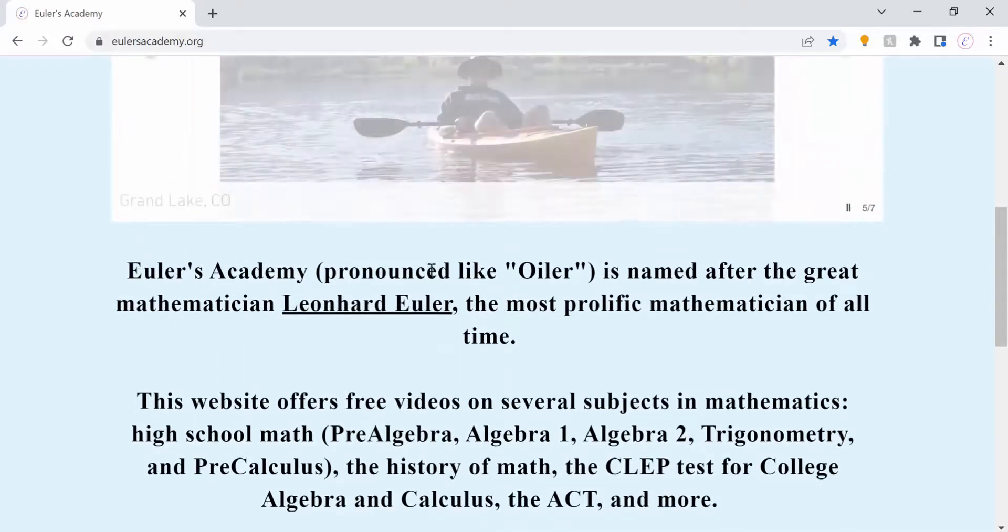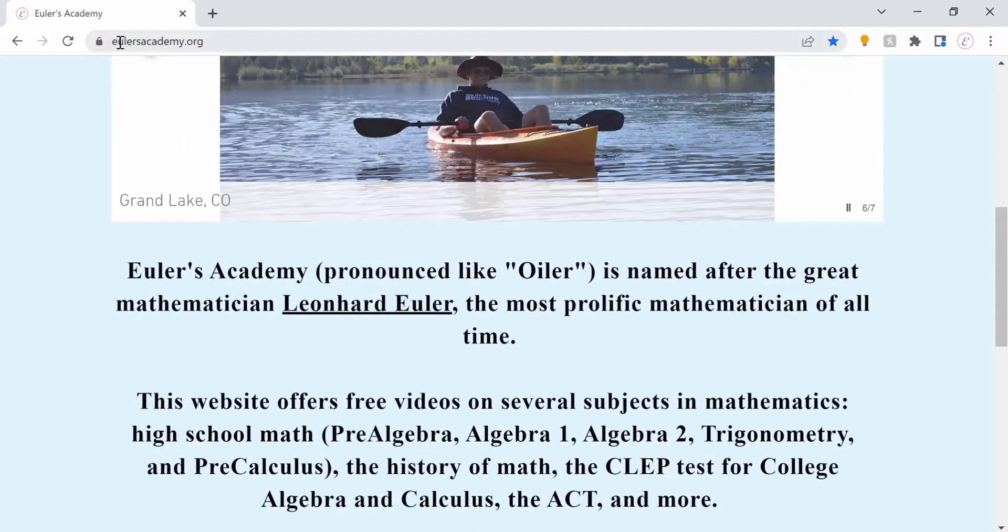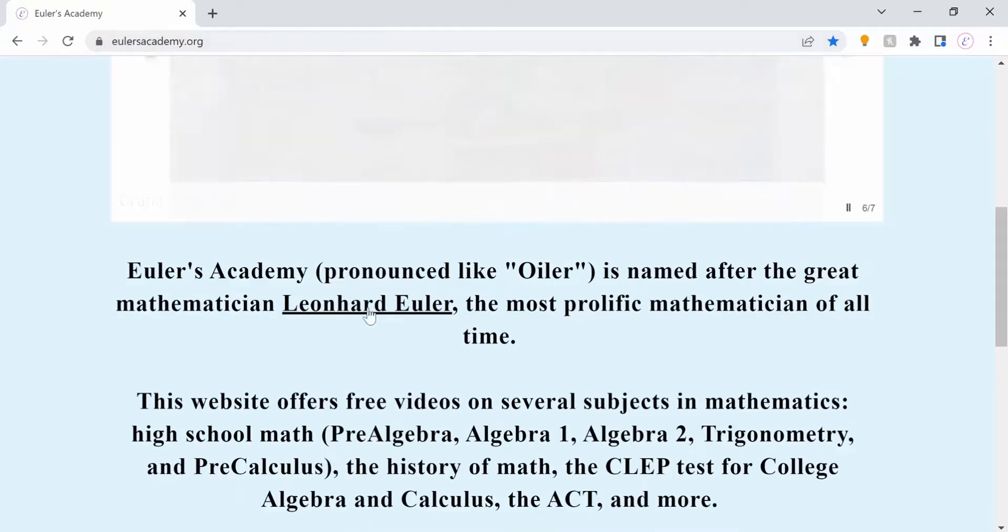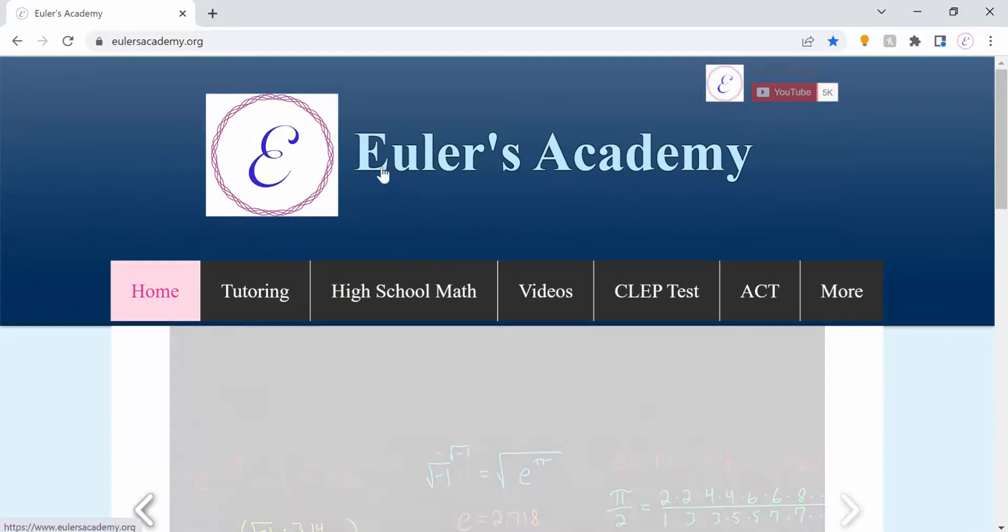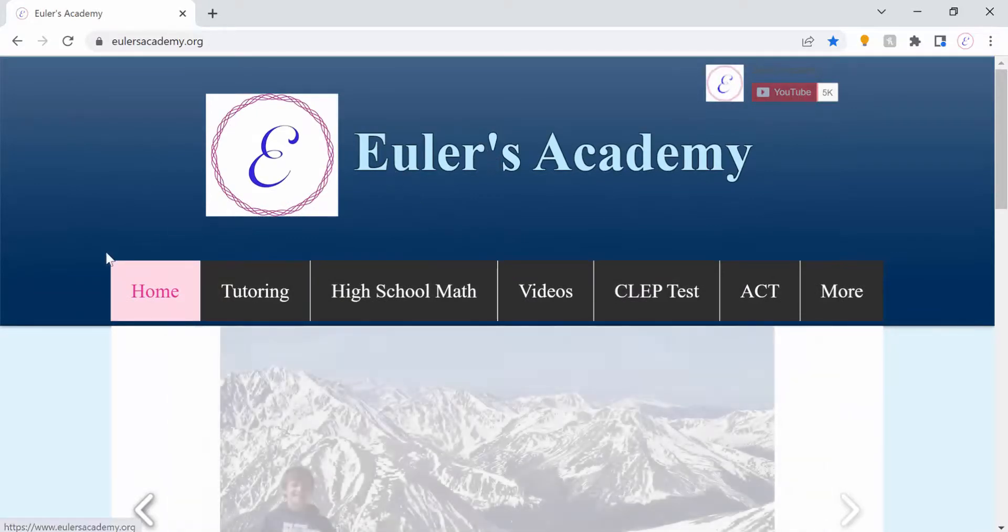The main point I want to make is that it's pronounced as Euler's Academy, named after the mathematician Leonard Euler, rather than Euler, which is how many people do pronounce it.